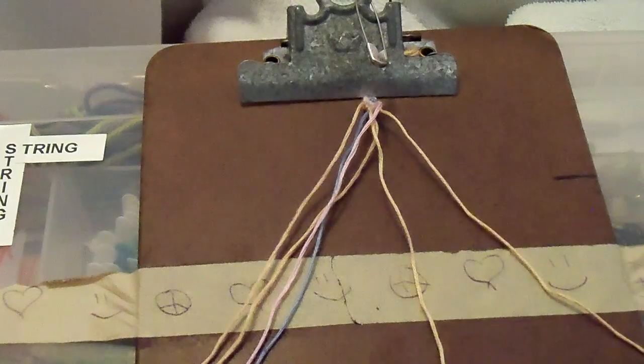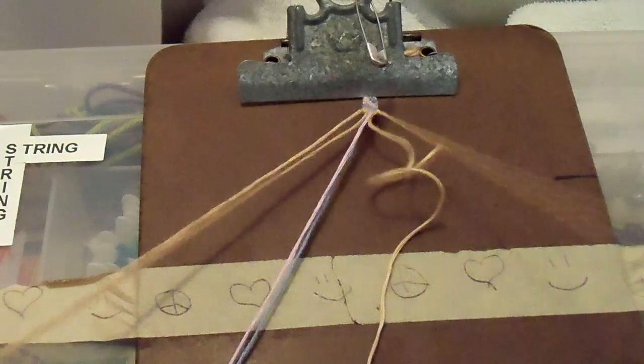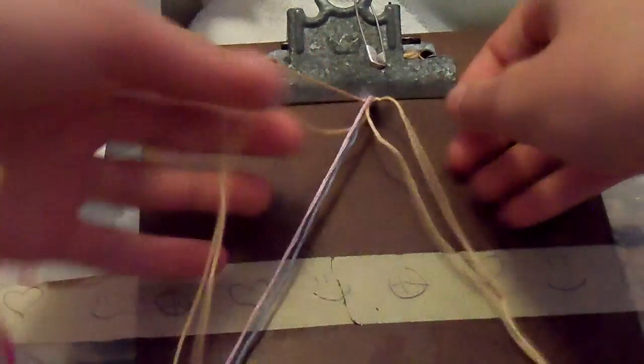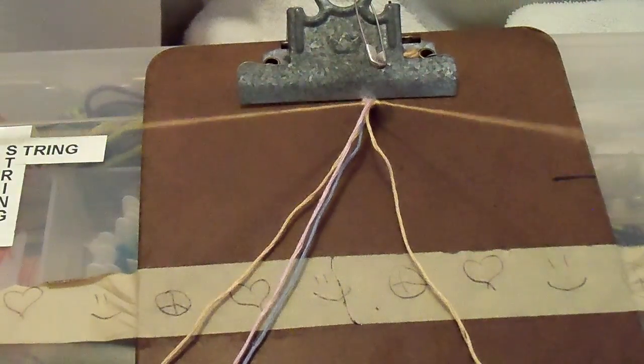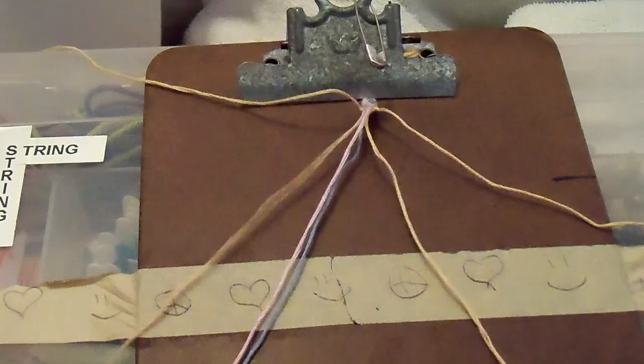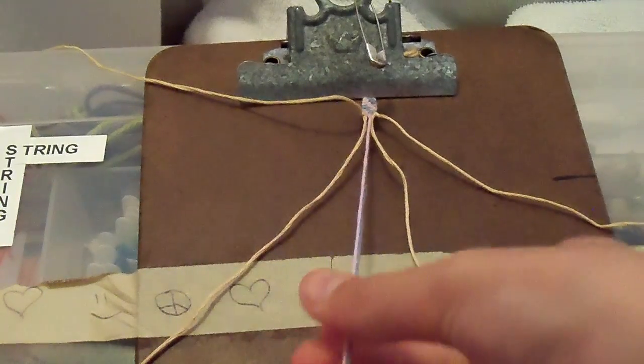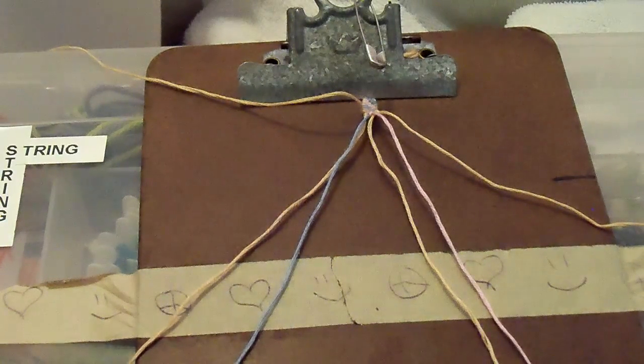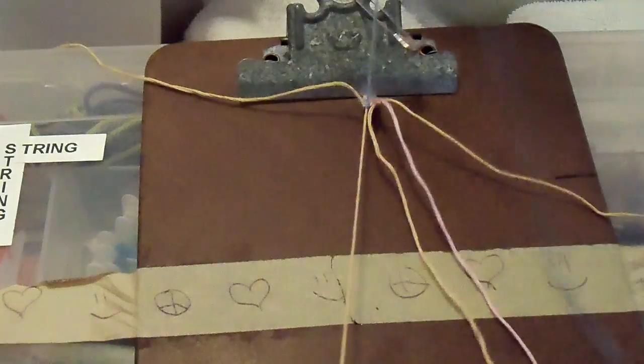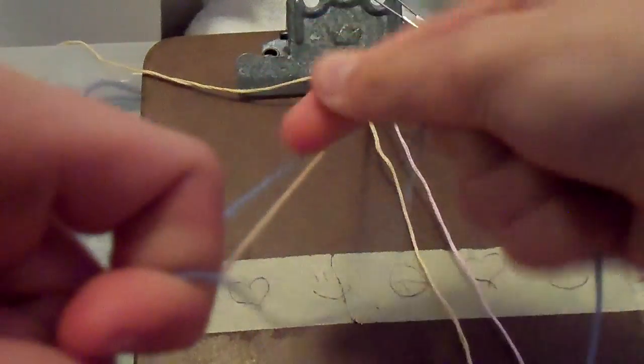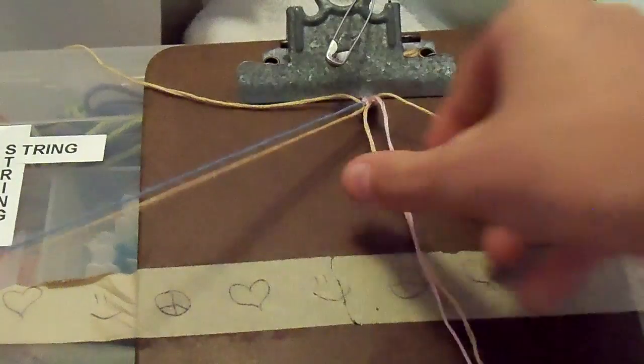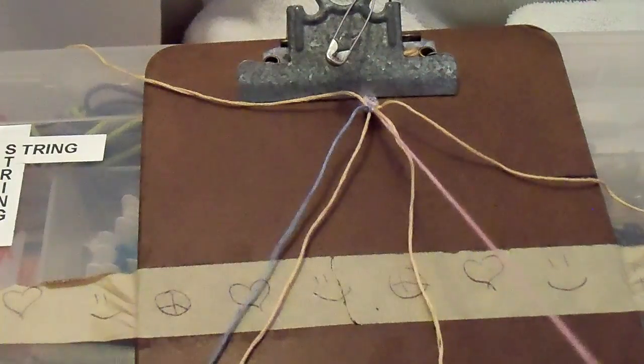All right, now what you're going to do is take your outer strands up and only work with the four strings that are here right now. So with your first two, you're going to do a backward knot, and then with your next two, you're going to do a forward knot.